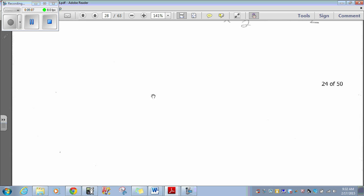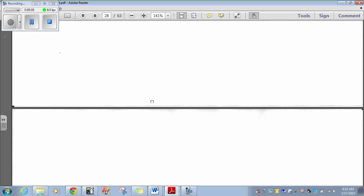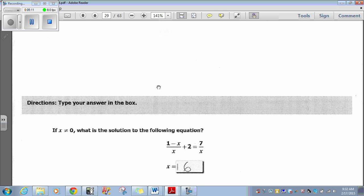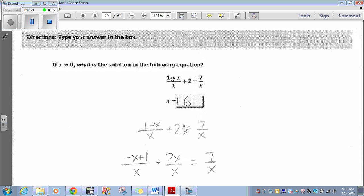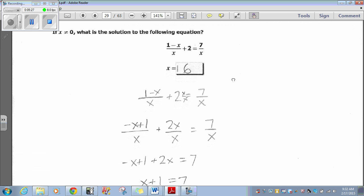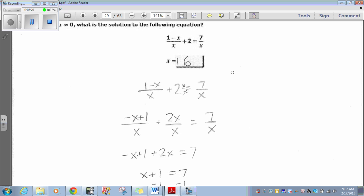Are these questions getting easier as we go on? I don't know. All right. Let's look at question 25. x not equal to 0. What's the solution to the following equation? All right. So, 1 minus x over x plus 2 equals 7 over x.